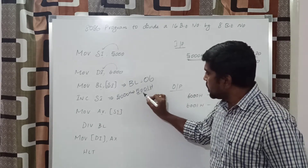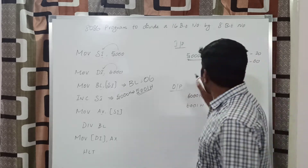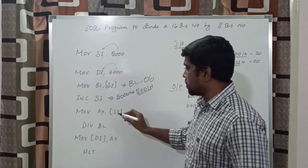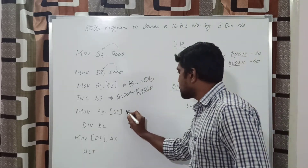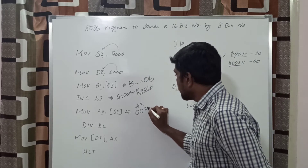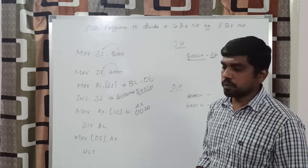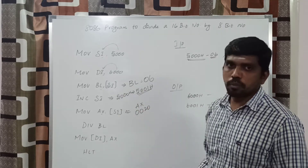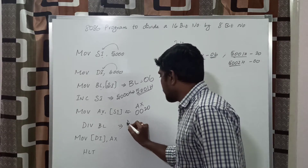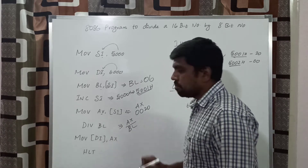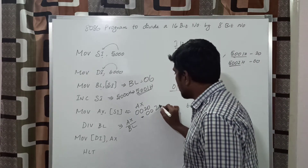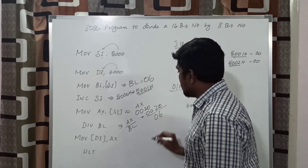At address 5001h, the data is 20h. At 5002h, the data is 00. After execution of this instruction, AX is a 16-bit register, and you store the content 0020h. Then you apply the division operation: DIV BL. Now AX is divided by BL. The AX value is 0020h and BL value is 06.